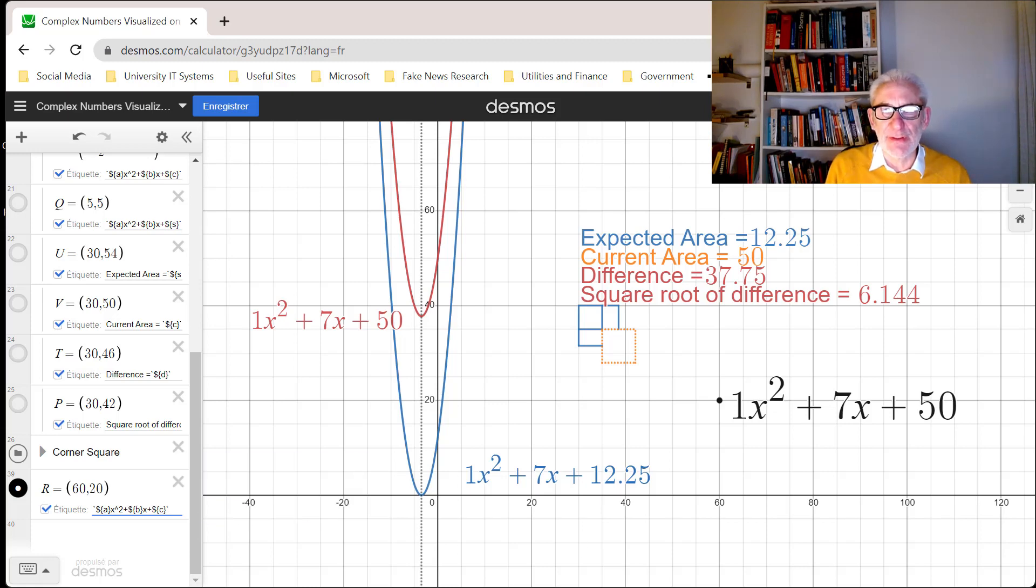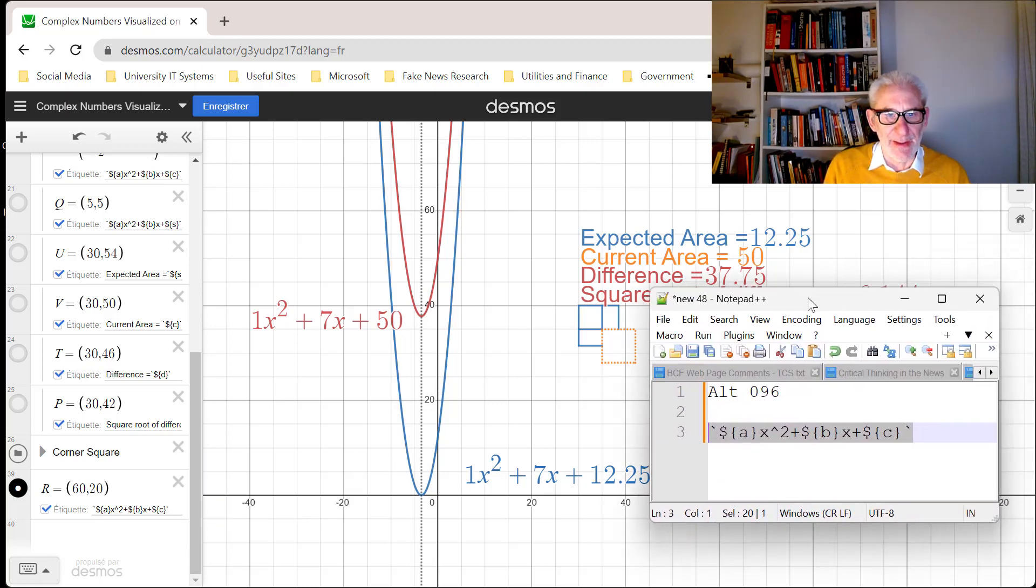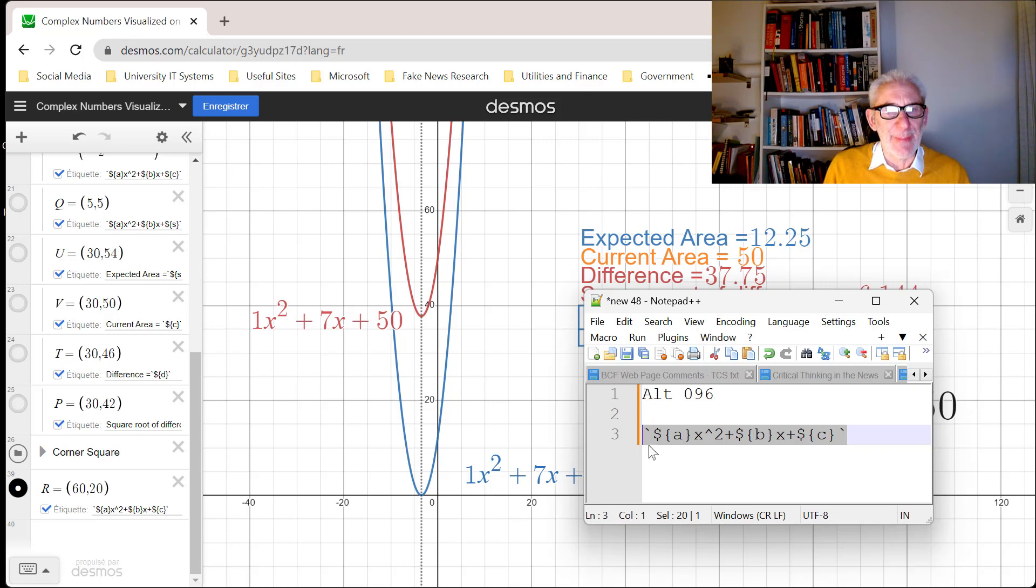That has been produced using the following code: the back tick—and if you haven't got back tick on your keyboard, hold down the alt key, type 096, release the alt key and you'll get a back tick—then the dollar sign, which is what LaTeX uses to tell you it's doing something useful.